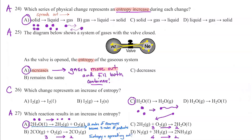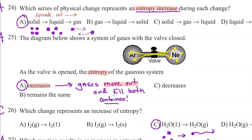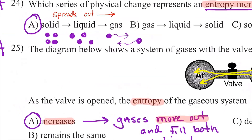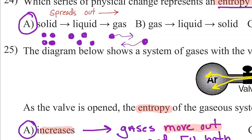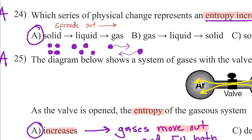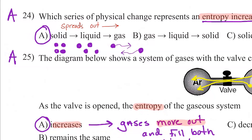Now we're talking about entropy questions. Number twenty-four: which series of physical changes represents an entropy increase? Think of entropy as spreading out — randomness, like a big rock eventually becoming smaller pieces. A solid has a regular repeating geometric pattern; liquids are looser; and gases fly around the room at hundreds of miles per hour. So entropy is increasing as we go solid to liquid to gas — molecules can move more freely, more degrees of freedom. Entropy is a measure of that spreading out.